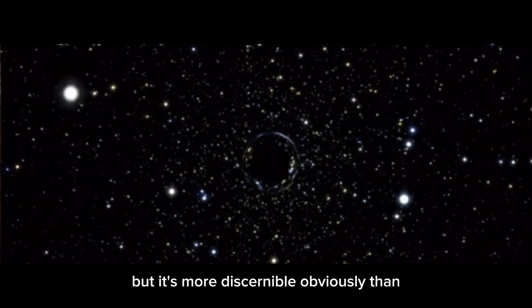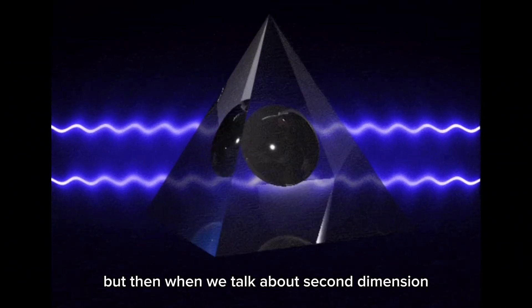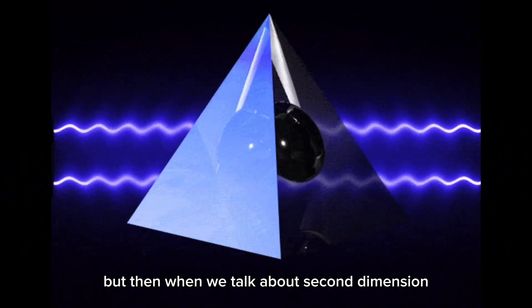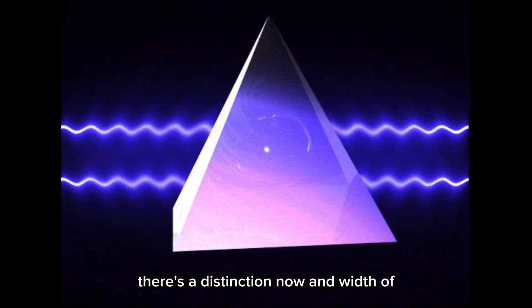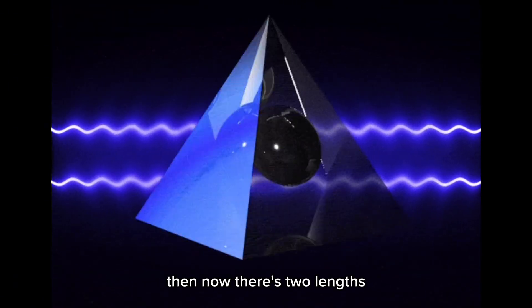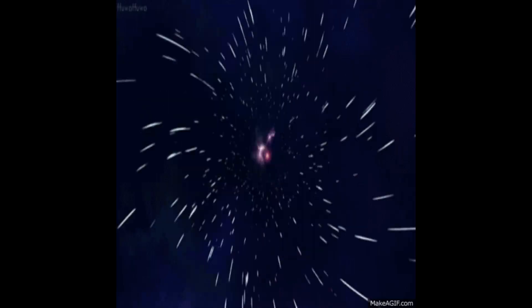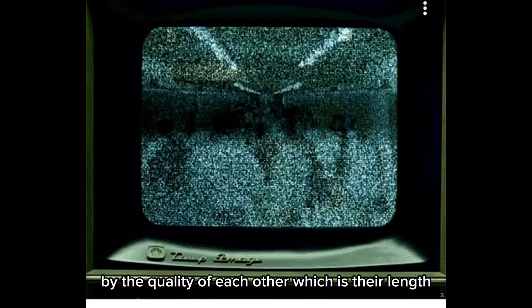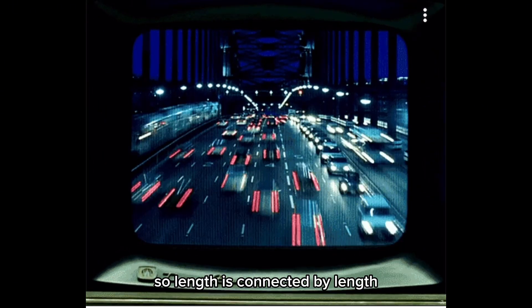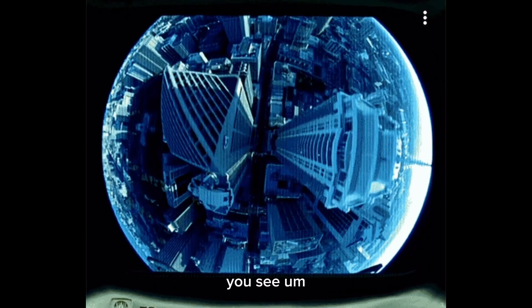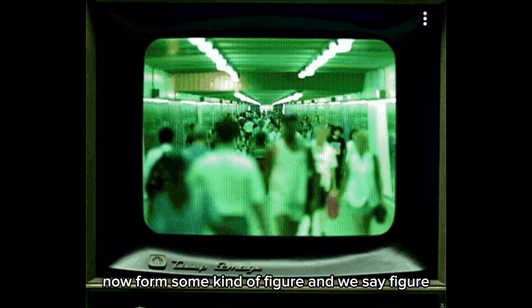It's more discernible obviously than the zero dimension. But then when we talk about the second dimension, now we're saying there's a distinction in width of the length. There's two lengths connected by the quality of each other, which is their length. So length is connected by length to form some kind of figure.